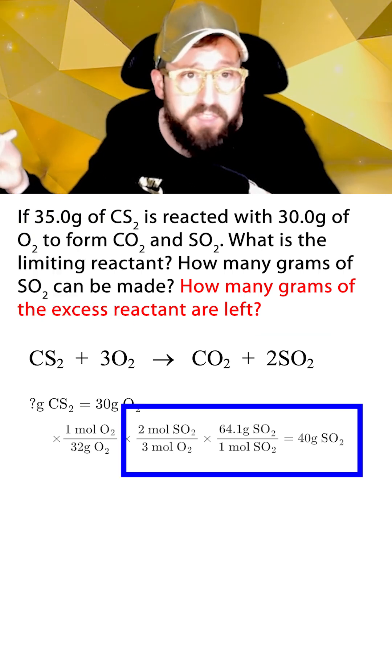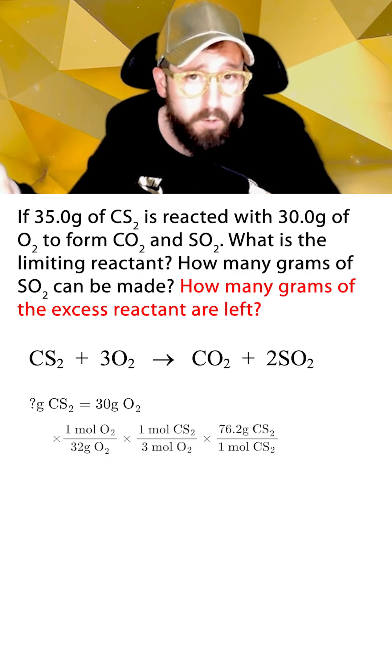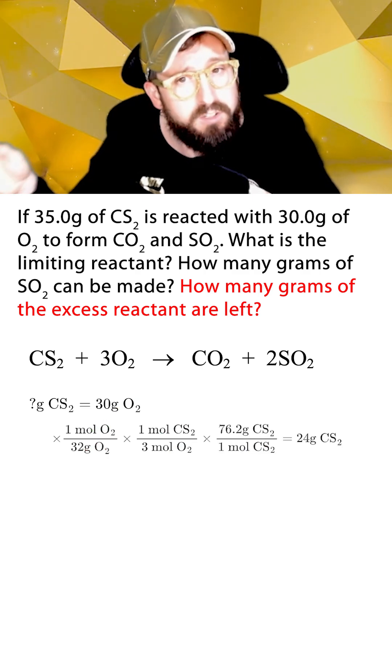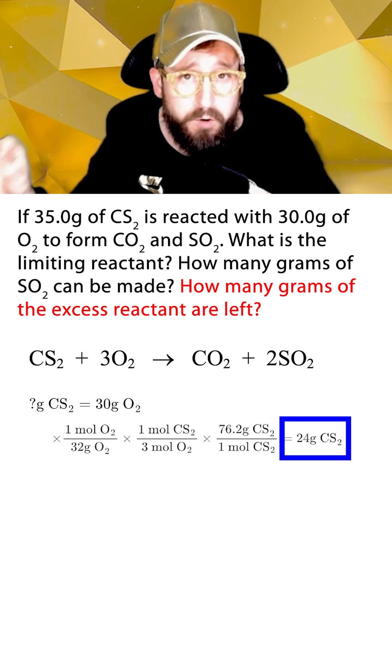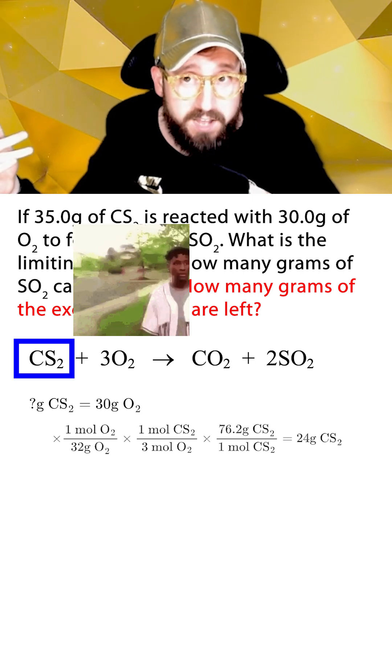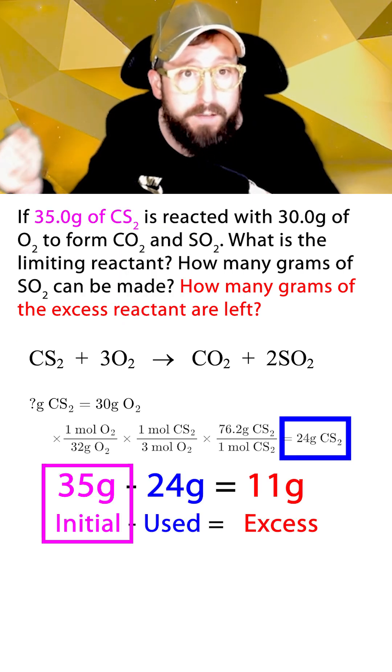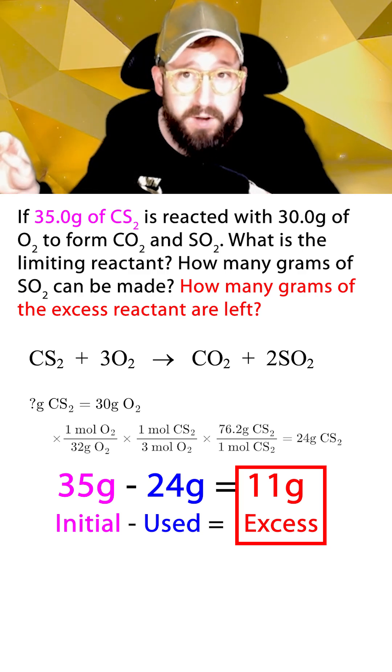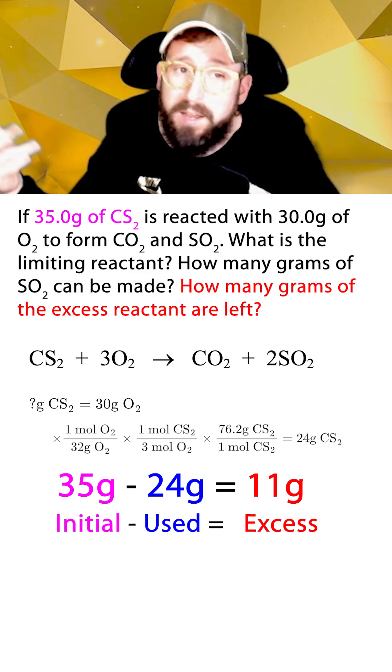All we have to do is swap out the end part of the stoichiometry equation, do a little math to solve, and this gives us 24 grams of CS2. The last step is to take this 24 grams of CS2 that was used in the reaction, and subtract it from the initial 35 grams of CS2 that we started with. This gives us 11 grams, which is the amount of excess CS2 that remains.